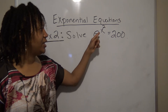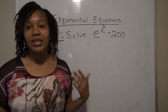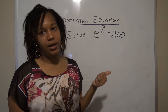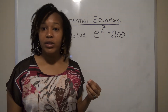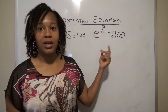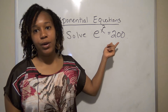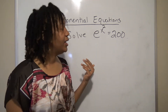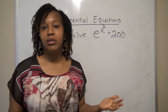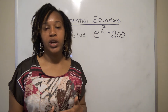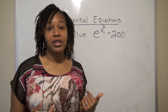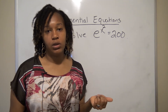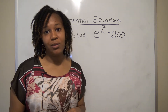For example two, we want to solve e to the x squared equals 200. This is also an exponential equation because the variable is in the exponent. The first method of rewriting with the same base won't work here since we can't rewrite 200 with an integer base of e. So we want to take the log of both sides — and specifically, do you know why we'd want to take the natural log?